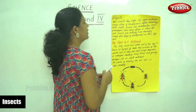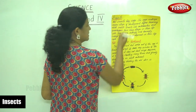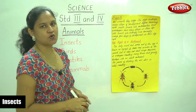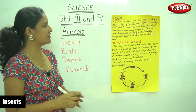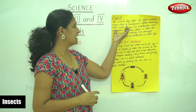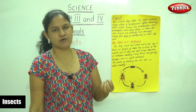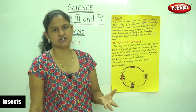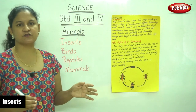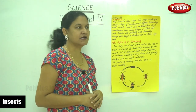All insects lay eggs. The eggs undergo various stages of development before becoming an adult insect. Once an egg hatches, it undergoes various stages of development until it becomes an adult insect.